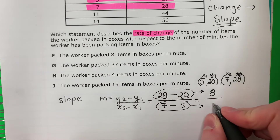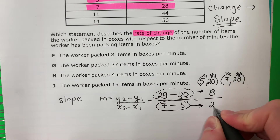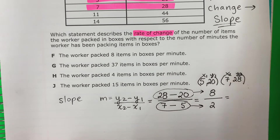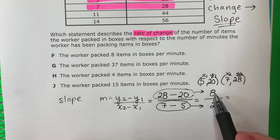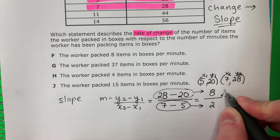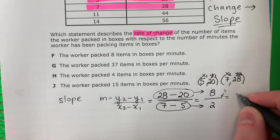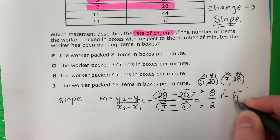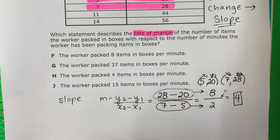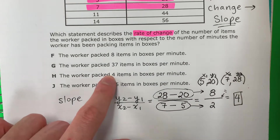8 divided by 2. 8 entre 2. Remember this is division. Este es división. 8 divided by 2 is 4. This is my answer.